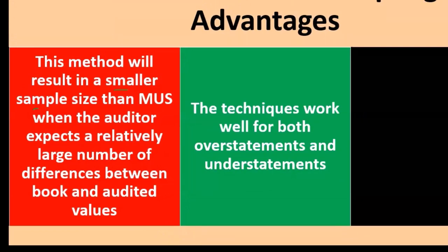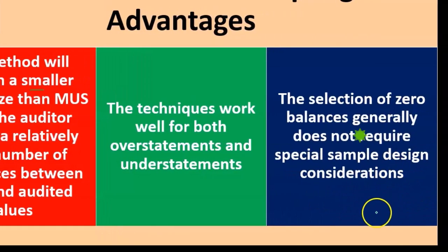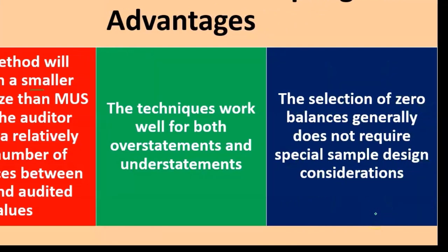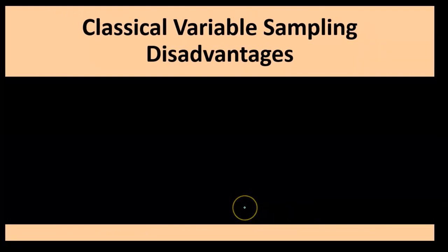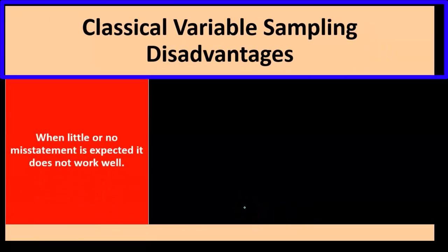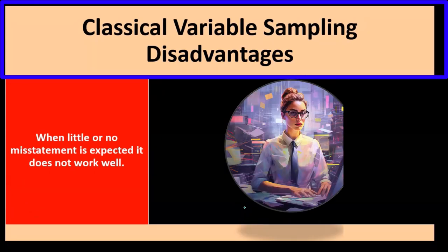Additional advantages include that the techniques work well for both overstatements and understatements, as opposed to monetary unit sampling. Also, the selection of zero balances generally does not require special sample design considerations, which was a problem with monetary unit sampling but is not a problem here with classical variable sampling.